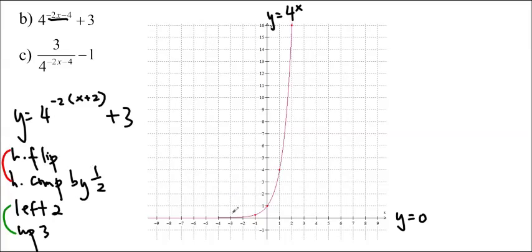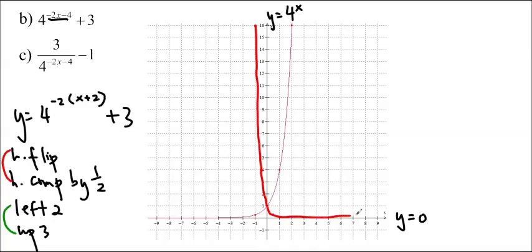For the horizontal flip and compression by one-half, we take all x values and multiply them by negative one-half. So the point at x equals negative 1 moves to x equals positive one-half, the point at x equals 0 stays at 0, the point at x equals 1 moves to negative one-half, and x equals 2 moves to negative 1. Connect the dots in a curvy and attractive manner, hugging the asymptote. Label this y equals 4 to the negative 2x.